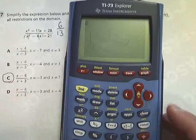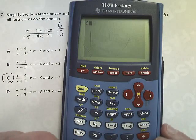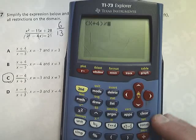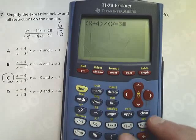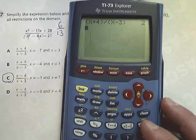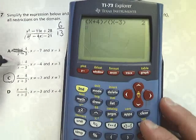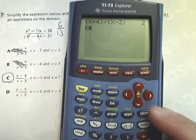And then just do these down here. x plus 4 divided by x minus 3 gives you 2, so that's not the right answer. This one can't be it either, so it's got to be the x minus 4 thing. It's the only one left.